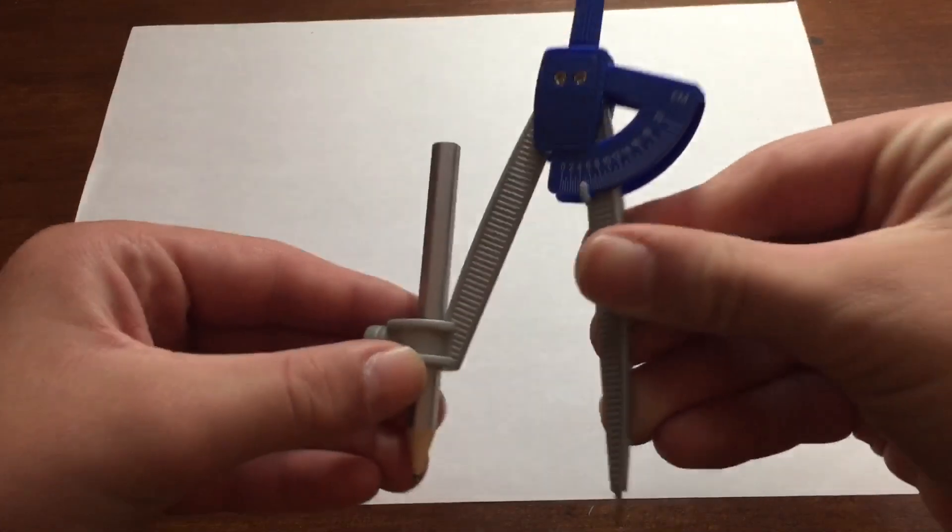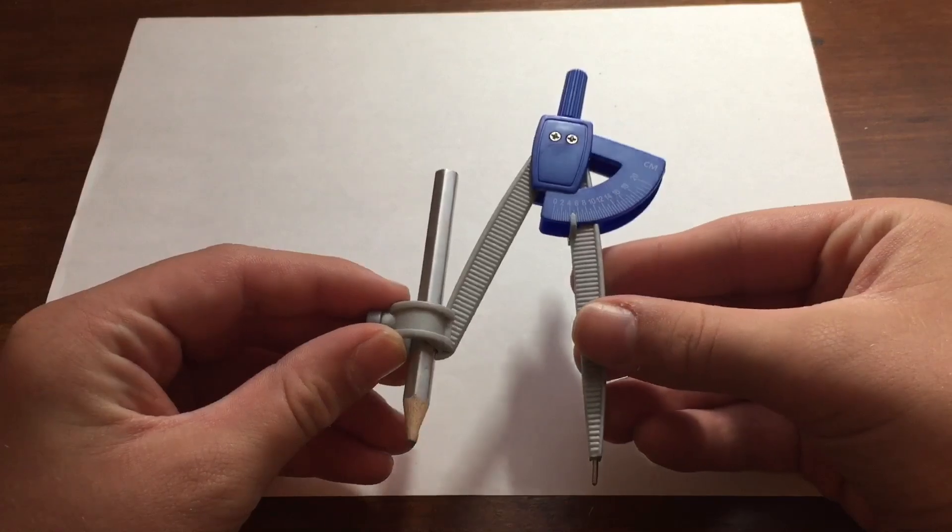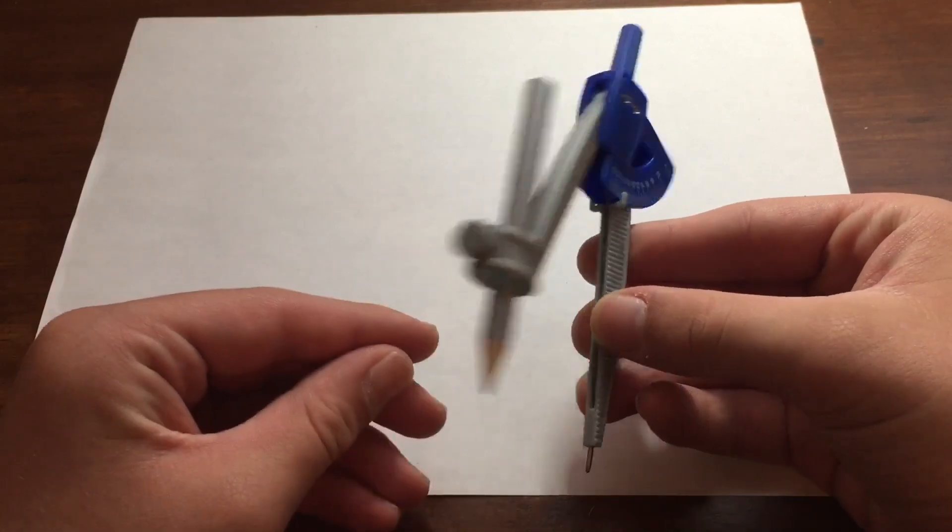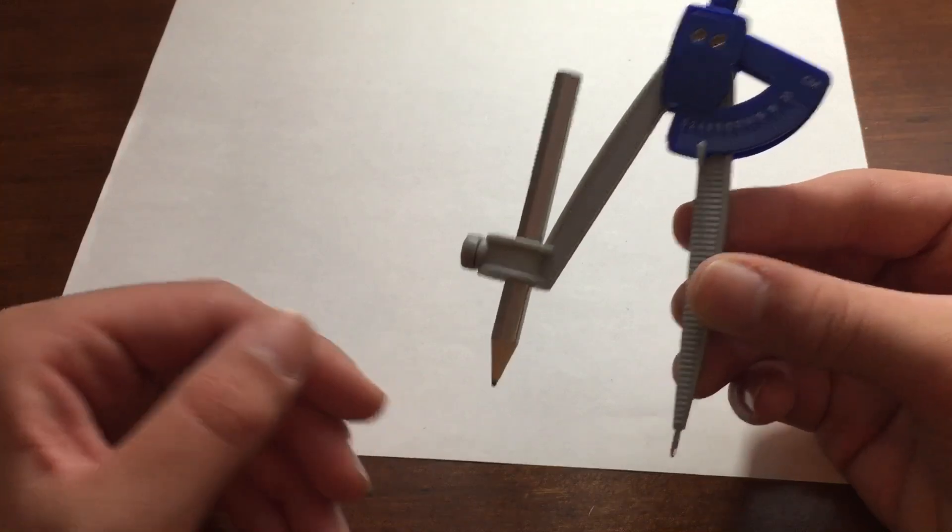Anyway, this is the type of compass we are going to be using, a mathematical compass. You can buy these for really cheap. It depends on where you get it, but just get yourself a compass.